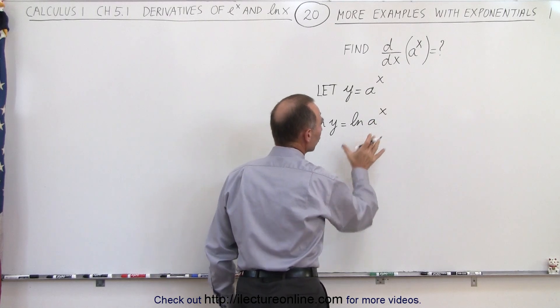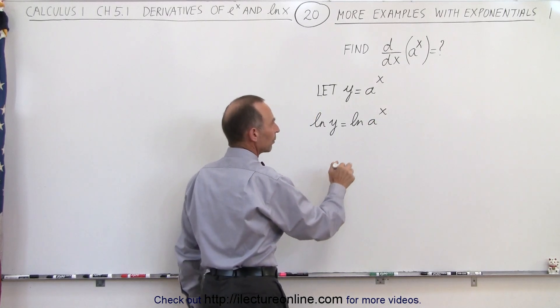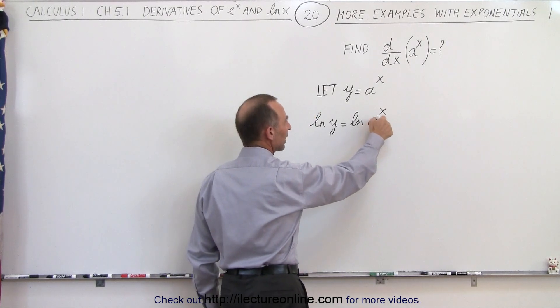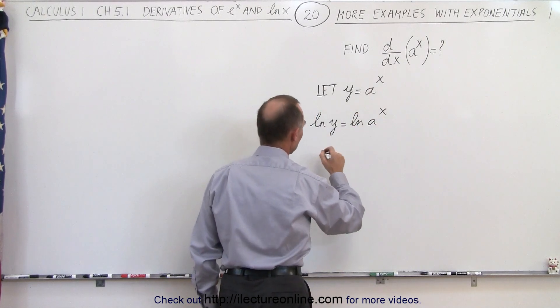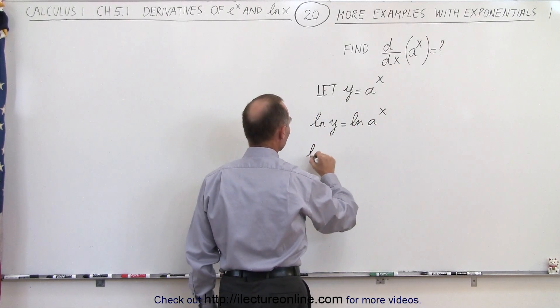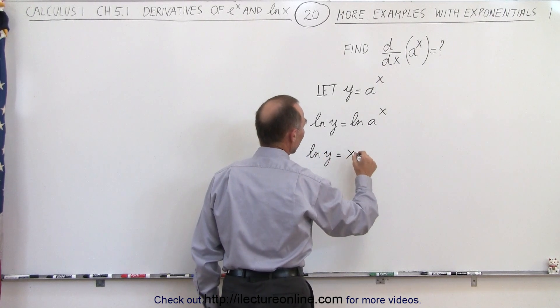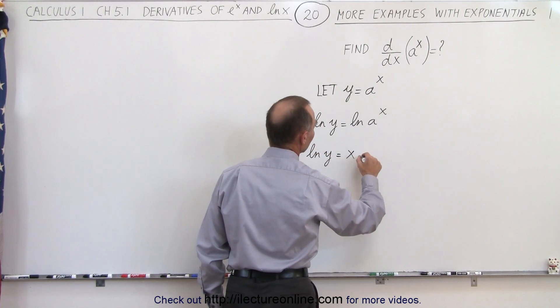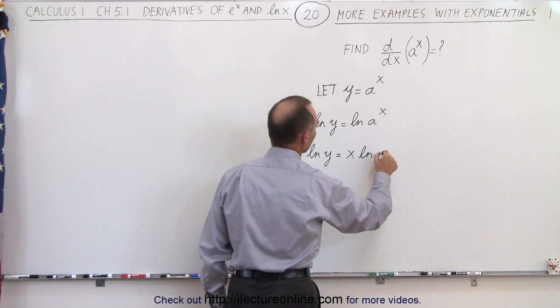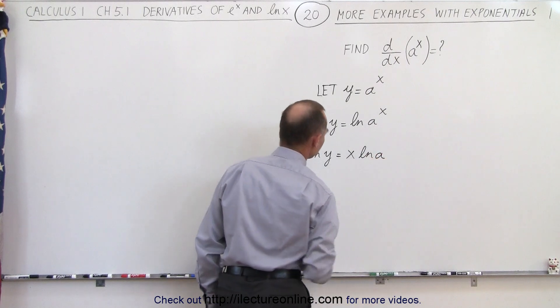And then using the rules of logarithms, we can move the x in front and write this as the natural log of y is equal to x times the natural log of a.